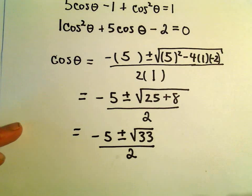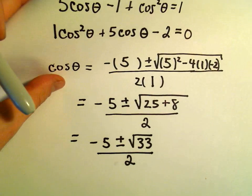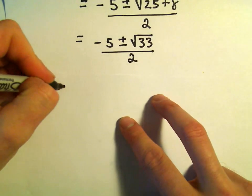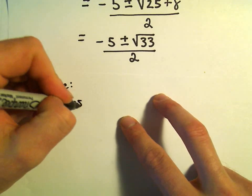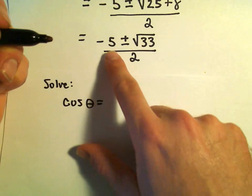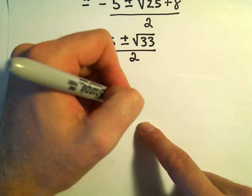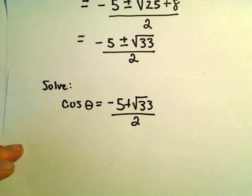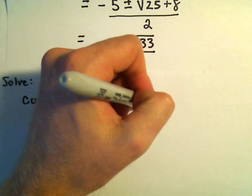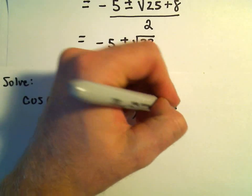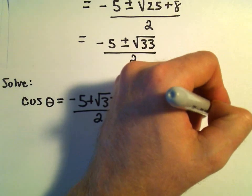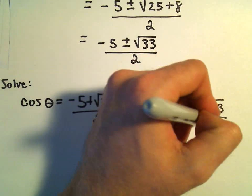Now let's think about these values. What we're trying to solve correspondingly, we're trying to solve the equations cosine theta equals negative 5 plus the square root of 33 over 2, and we're also trying to solve the equation cosine theta equals negative 5 minus the square root of 33 over 2.